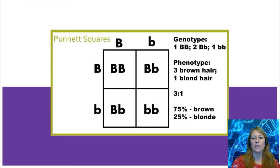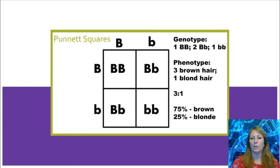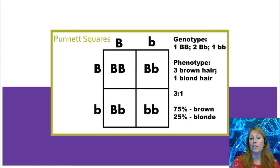Looking at genotype and phenotype using a Punnett square: when crossing two heterozygous parents for hair color (Bb x Bb), the genotypic ratio is 1 homozygous dominant : 2 heterozygous : 1 homozygous recessive. For phenotype, three would have brown hair and one would have blonde hair — a 3:1 phenotypic ratio — which is 75% brown and 25% blonde. That concludes our introduction to genetics.